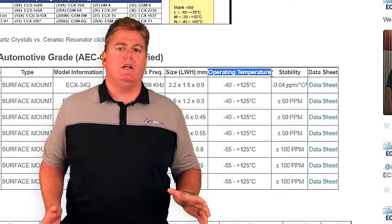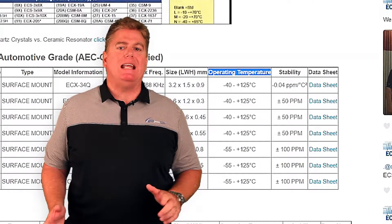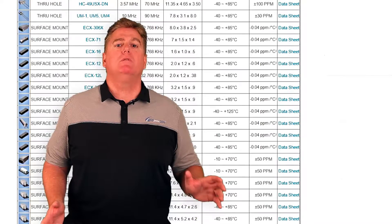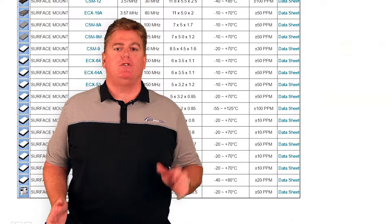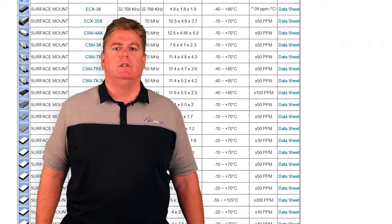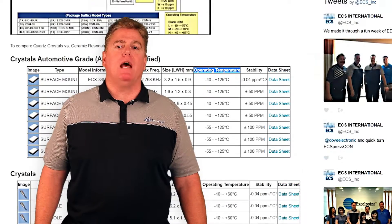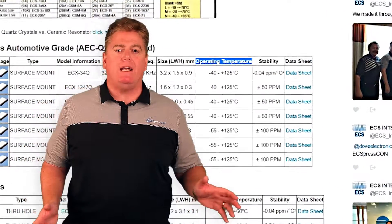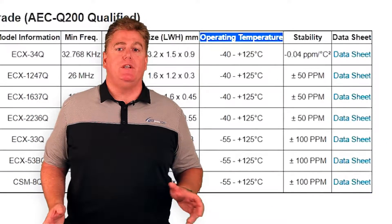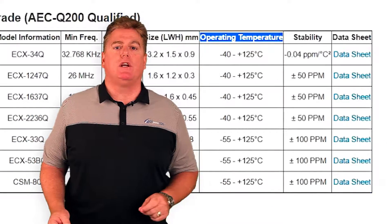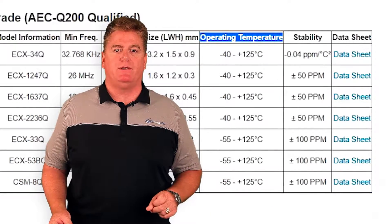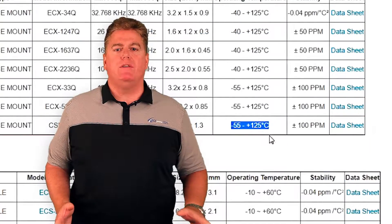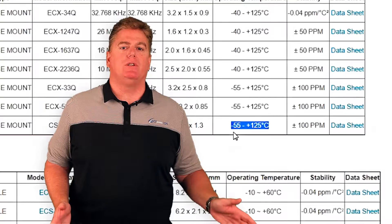Operational temperature is the defined band of minimum and maximum temperatures that the crystal could reasonably expect to encounter in its normal application. Because there are many different applications for crystals, they are offered in a variety of temperature options. The unit of measure is usually in degrees Celsius. The wider the temperature band, the more difficult and costly it is to produce the crystal.